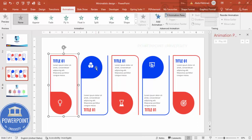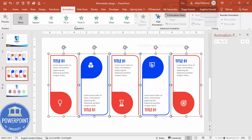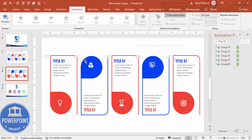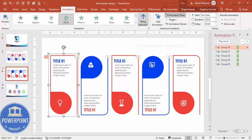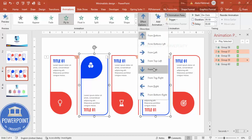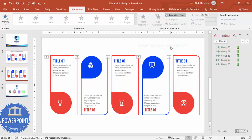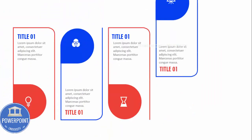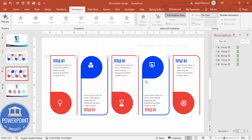With grouping done, go to Animations > Animation Pane. Select all the groups and apply a Fly In animation set to On Click. Make the first group fly in from the bottom and the others from the top. When you play it, each option appears in sequence: one, two, three, four, and five.